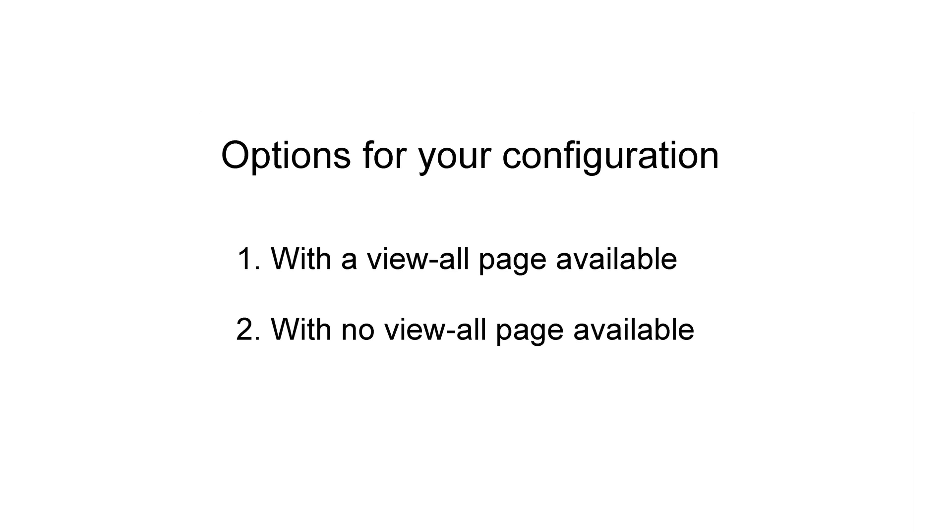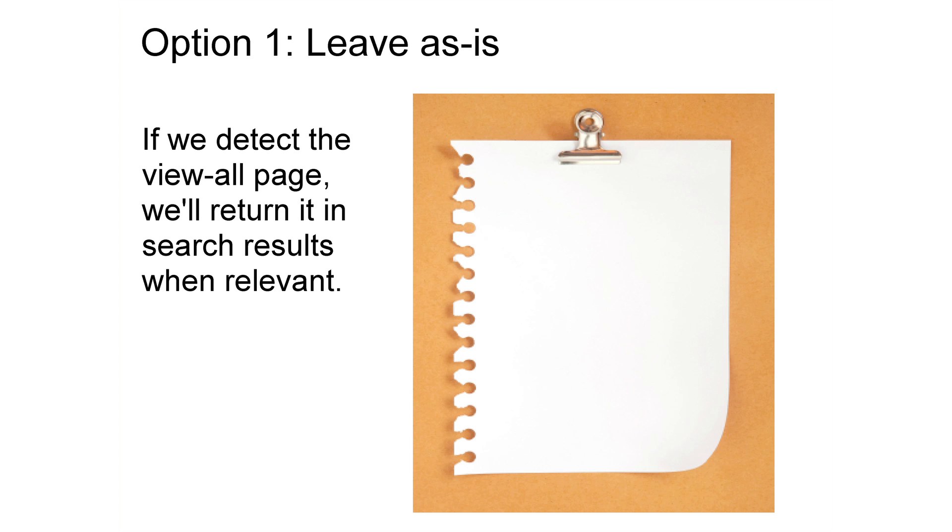Now let's talk about some of the options you have as a webmaster with paginated content. We're first going to look at the situation where webmasters have paginated content and a view-all page available. If you have a site with paginated content and a view-all page, you have three good options. First, you can leave as is — there's nothing you have to do if you have other priorities on your site. Paginated content exists throughout the web, and searchers will continue to do an even better job of handling it. If you have a view-all page available, Google will automatically try to detect that, send searchers there, and consolidate your indexing properties. Option one is a very solid option.